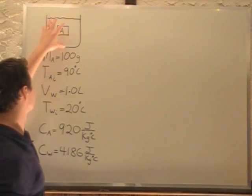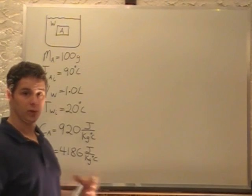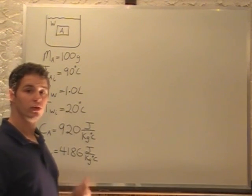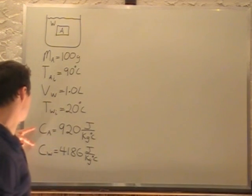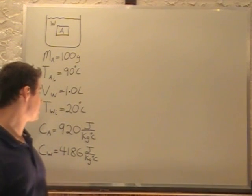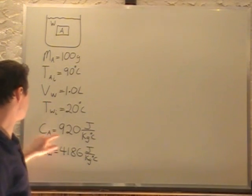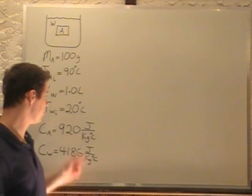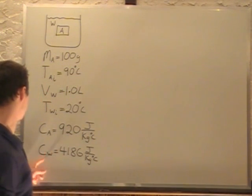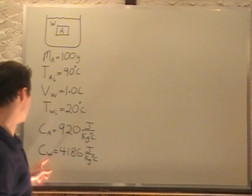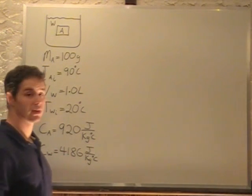So what is the final temperature that this water and aluminum combined will reach? We need to know two constants to start — the specific heats of both. The specific heat capacity of aluminum is 920 joules per kilogram per degree Celsius, and the specific heat capacity of water is 4186 joules per kilogram per degree Celsius.